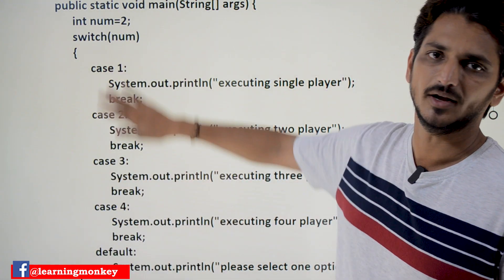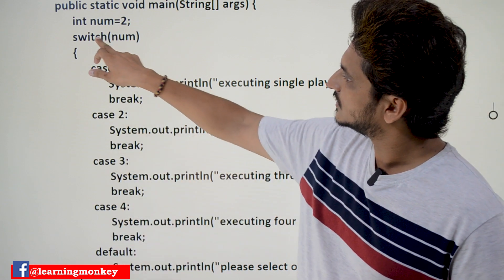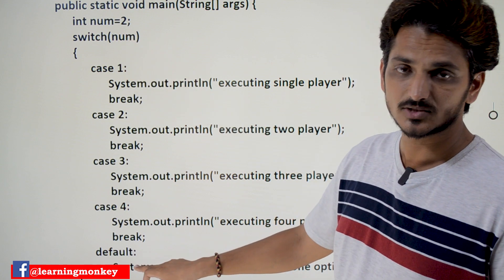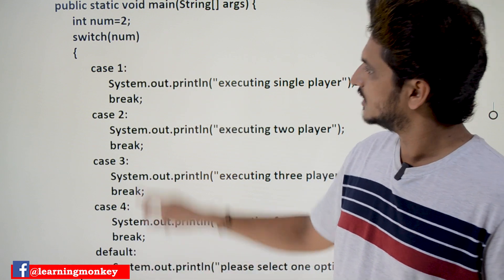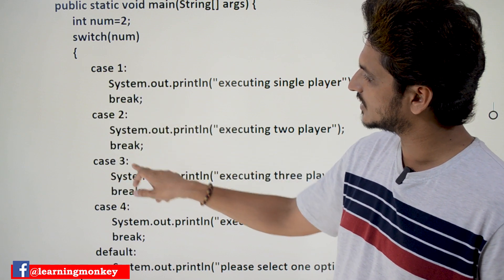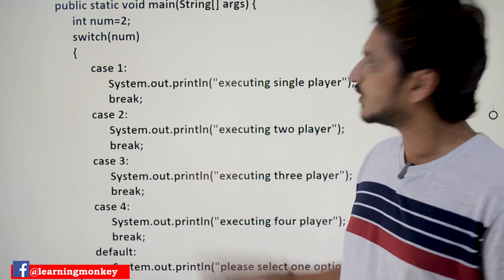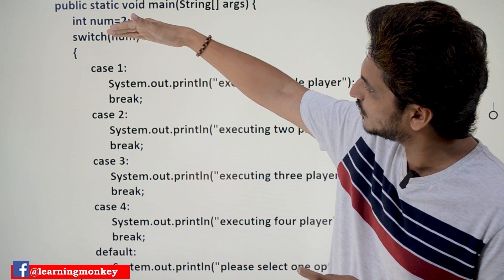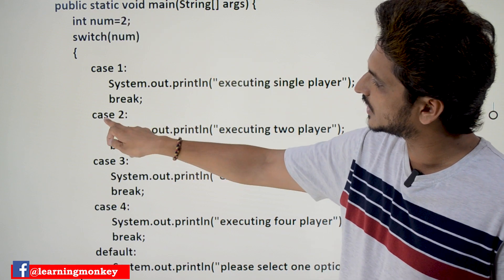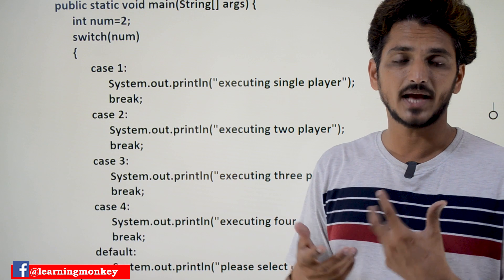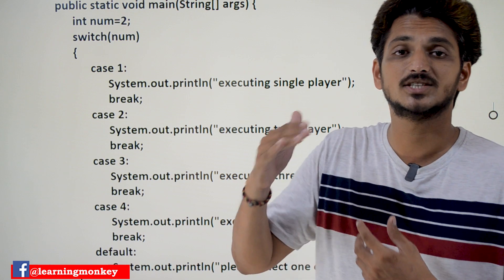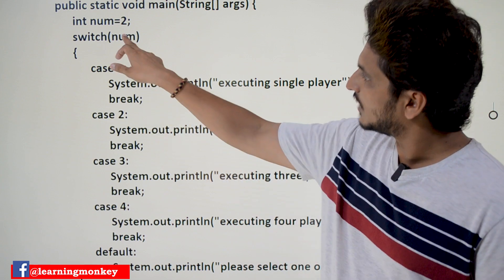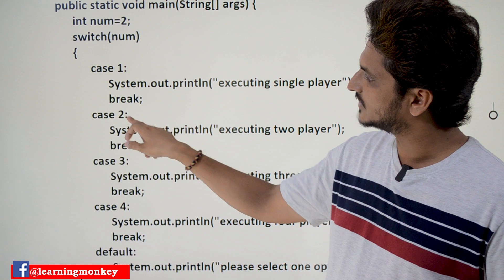This is the body of the switch statement. Once you provide the number value, it is going to check the cases inside the switch body — case 1, case 2, case 3, case 4, default. Our number is 2, so the execution flow moves directly to case 2, wherever the num value is matching. There it will go and start executing that block of code.